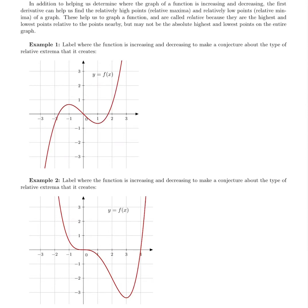In addition to helping us determine where the graph of a function is increasing and decreasing — remember, positive derivative means increasing and negative derivative means the original function is decreasing — the first derivative can also help us find relatively high points called relative maxima or local maxima, and relatively low points called relative minima or local minima. These are called relative or local because they are the highest and lowest points relative to nearby points, but they may not be the absolute highest and lowest points.